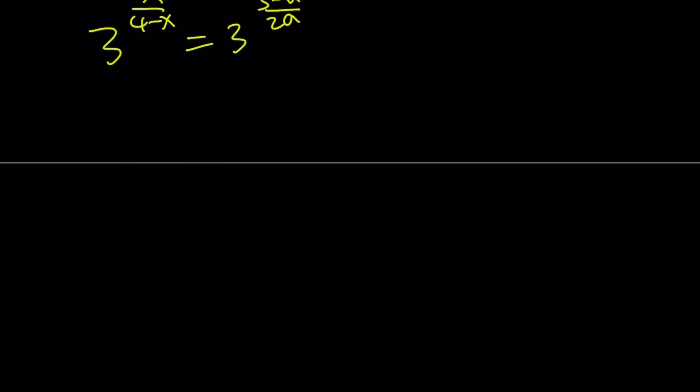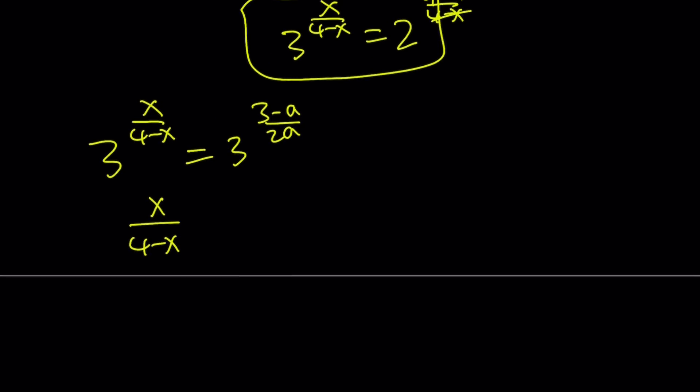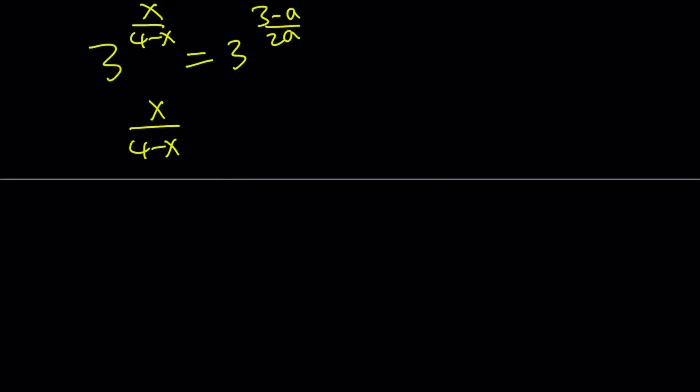So this means X over 4 minus X, and obviously all these cases, A cannot be 0, X cannot be 4, because as you know, it's the log of unrelated numbers. So it can't be an integer and so on and so forth. Now we've got the following. Not so great. We are supposed to solve for X.